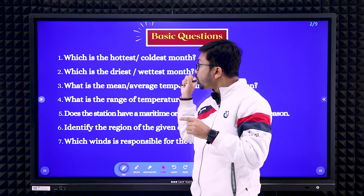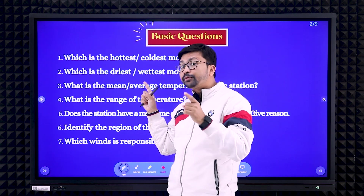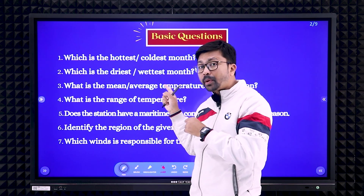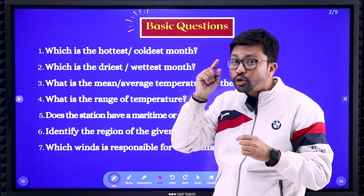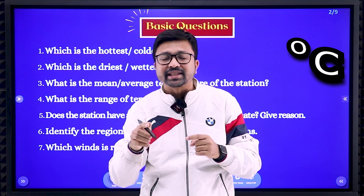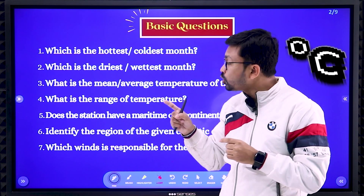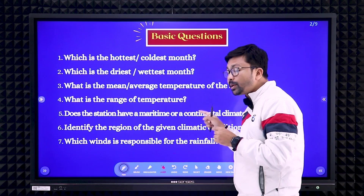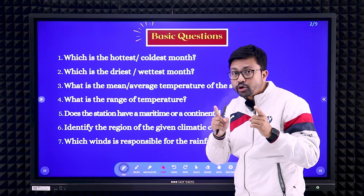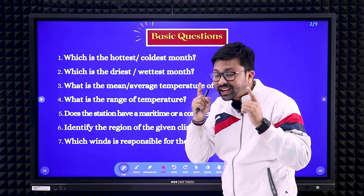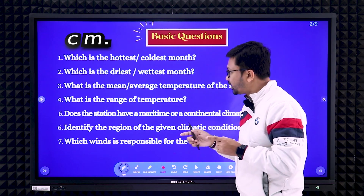Make sure — don't forget — for the temperature part you need to use the unit degree Celsius. Degree Celsius is the unit you need to use for temperature. And for rainfall, you need to use the unit centimeter.